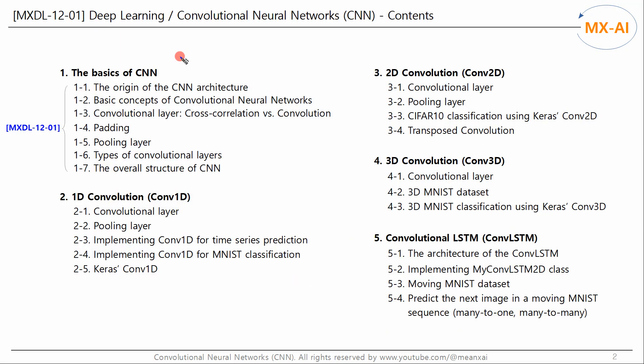Let's look at the full table of contents. In Chapter 1, we will look at the basic concepts and main components of CNN. In Chapter 2, we will look at 1D convolution, which is mainly used in time series or natural language processing. In Chapter 3, we will look at 2D convolution, which is typically used for RGB images.